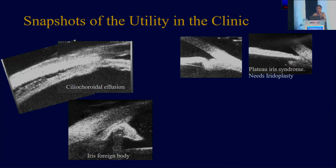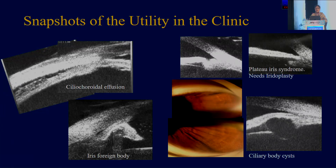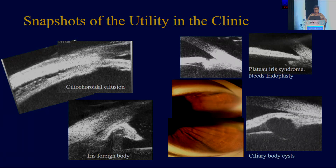The image on top shows a laser iridotomy which is done, but pressures have remained high and the angles haven't seemed to open up. The UBM showed a plateau iris — you can see the anterior ciliary body there. We realized that what this patient required was actually an iridoplasty, and you can see it has opened up and pulled the iris from the angle. Sometimes if you have lumpy, bumpy irises and wonder what's behind, there's nothing like the UBM to show you these ciliary body cysts which are right behind.